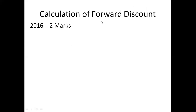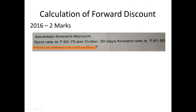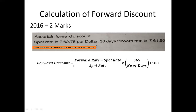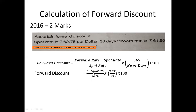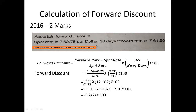We will now calculate a forward discount from the 2016 question paper (two marks). Given: spot rate ₹62.75 per dollar, and the 30-day forward rate is ₹61.50. The formula remains the same: (Forward rate − Spot rate) / Spot rate × (365 / number of days) × 100. Since the problem is in days: (61.50 − 62.75) / 62.75 × (365 / 30) × 100 = −24.20%. This negative answer indicates a forward discount.